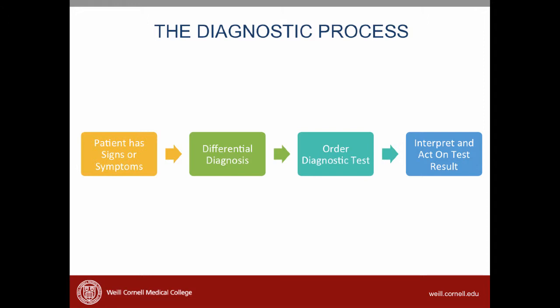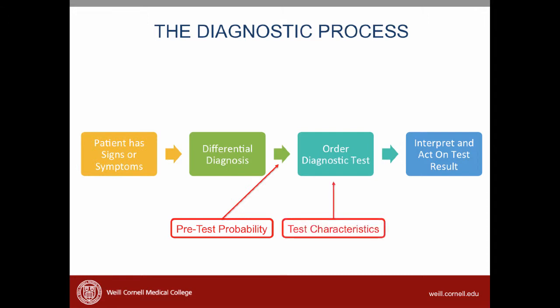I'd like you to consider three things when we think about articles about diagnosis. First, what is the probability that a patient has the disease before you get the test? This is called the pre-test probability. It's important because if the pre-test probability is very, very low, ordering the test may not change your decision about whether the patient has a disease or condition. Or if the pre-test probability is really high, that may also not alter your decision based on the diagnostic test. The second question is, how good is that diagnostic test? We're going to talk about test characteristics and how we interpret those test characteristics. Third, and based on those two previous items, the pre-test probability and the test characteristics, we're going to determine a post-test probability.